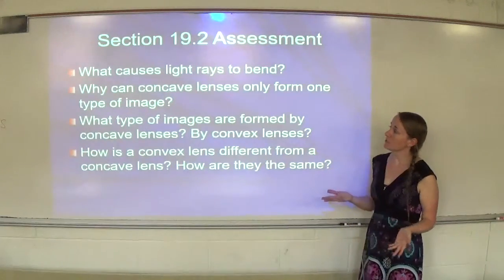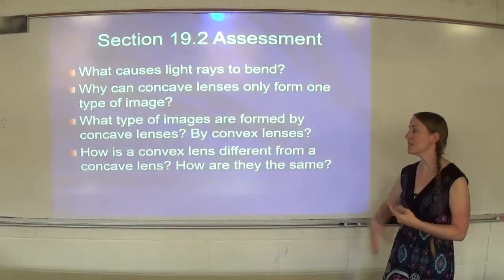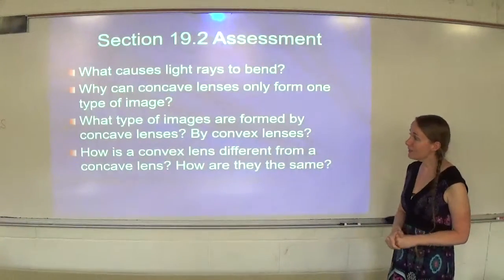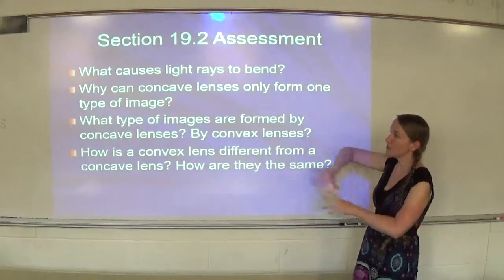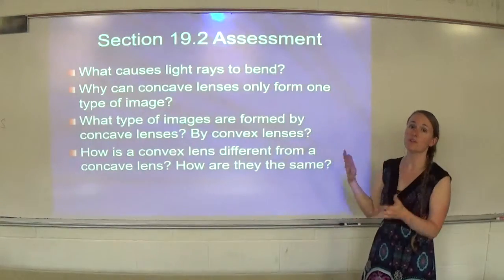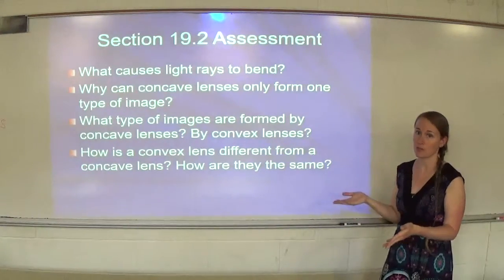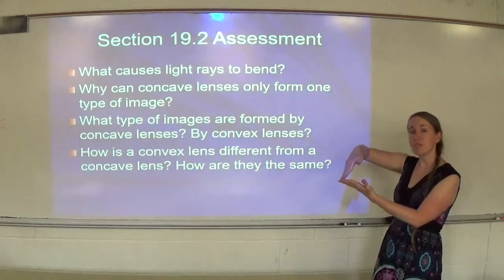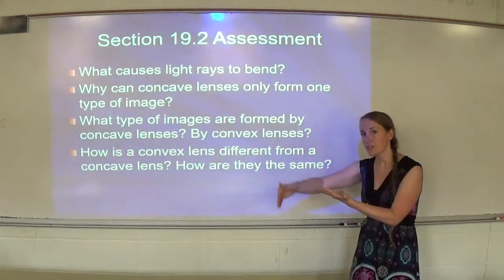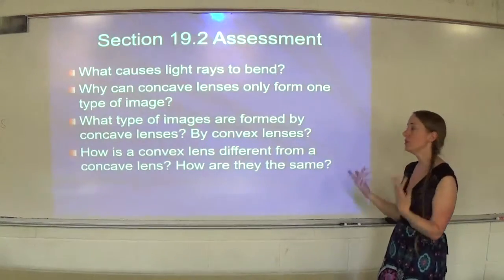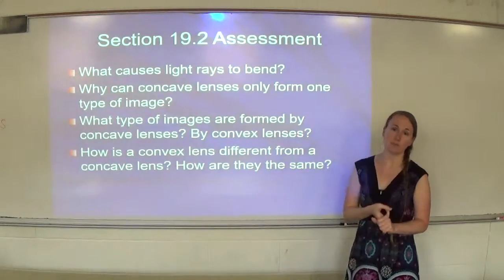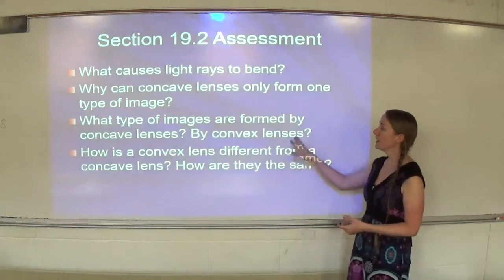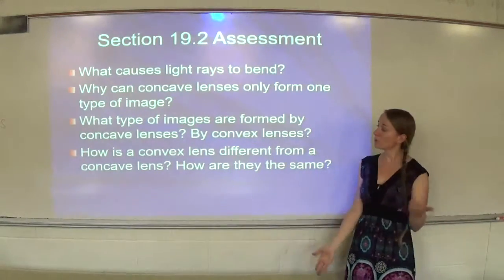What type of images are formed by concave lenses and what type are formed by convex lenses? Concave lenses, because they spread light out, can only form virtual images. Convex lenses bring rays to a focal point, and depending on where the object is in relation to the focal point, they can form either a real or a virtual image. So: concave lenses form only virtual images; convex lenses can form virtual or real images.